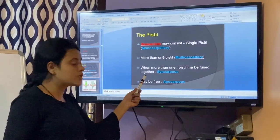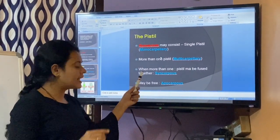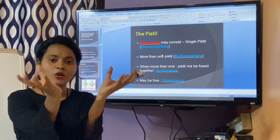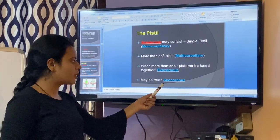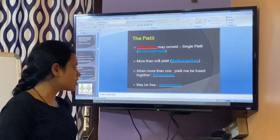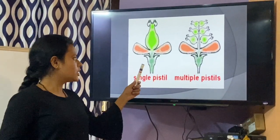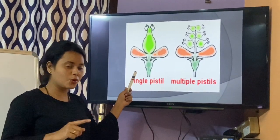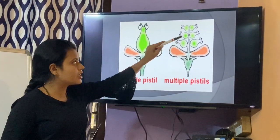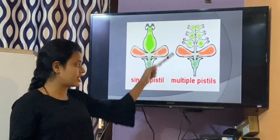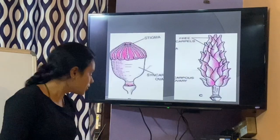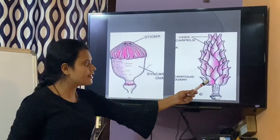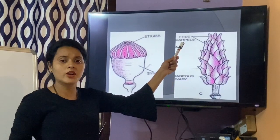If a particular flower is having many pistils, it is called multicarpillary. And if these pistils are fused together, then the particular flower is called syncarpous. If carpels are free — not attached to each other, not fused — then it is called apocarpous. So if there is only single pistil it is monocarpillary, many carpels is multicarpillary, fused carpels is syncarpous, and free carpels is apocarpous.